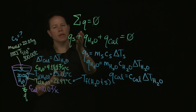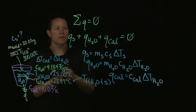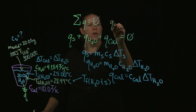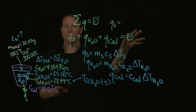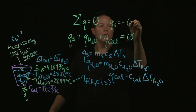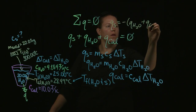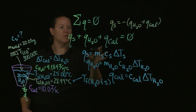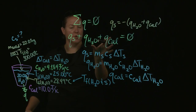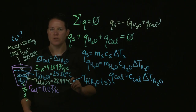I'm going to isolate or solve for Q of S. By solving for Q of S, if I put the equal sign here, I need to subtract both the Q of water and Q of calorimeter from both sides. When I subtract it from this side it goes to zero; when I subtract from this side I just get those values.